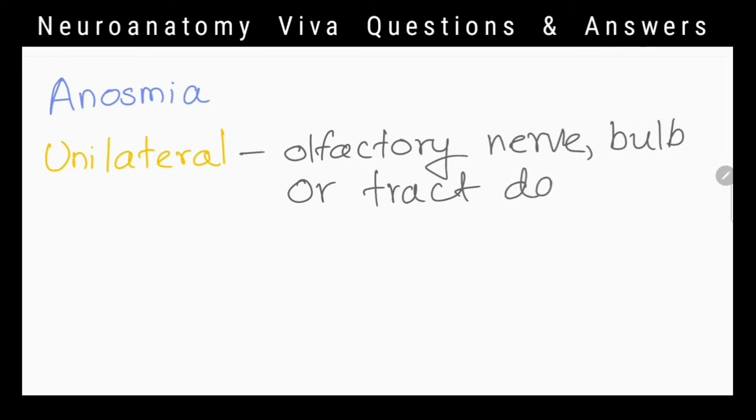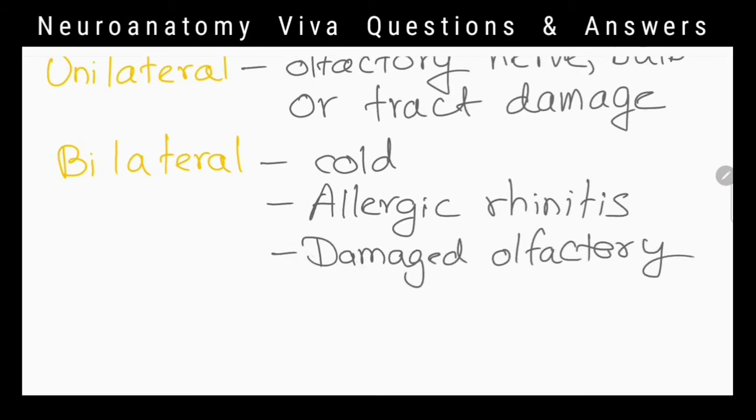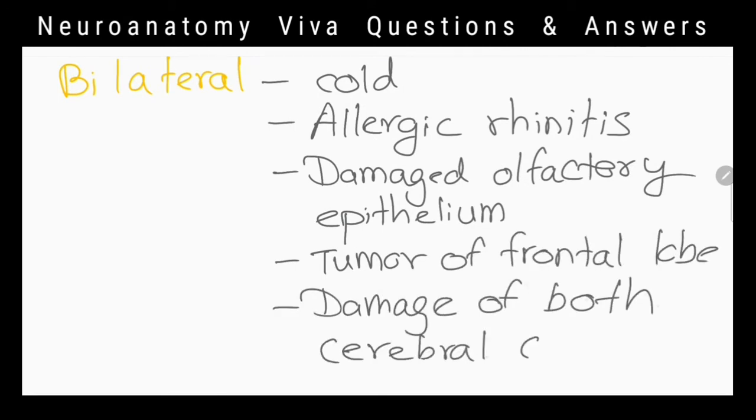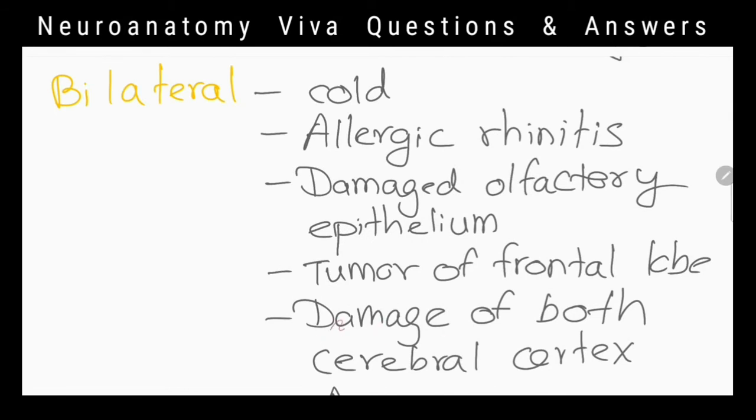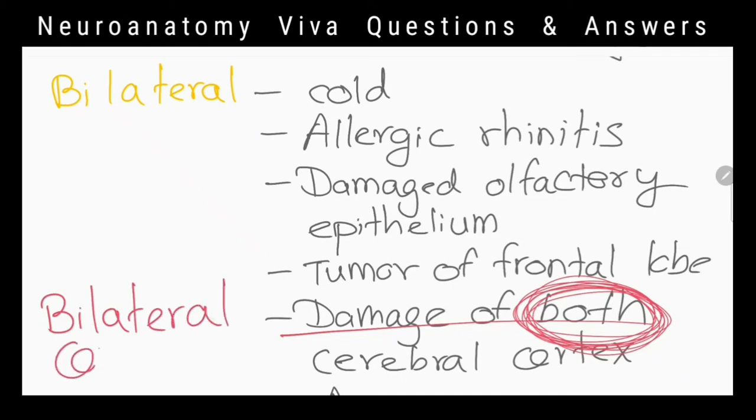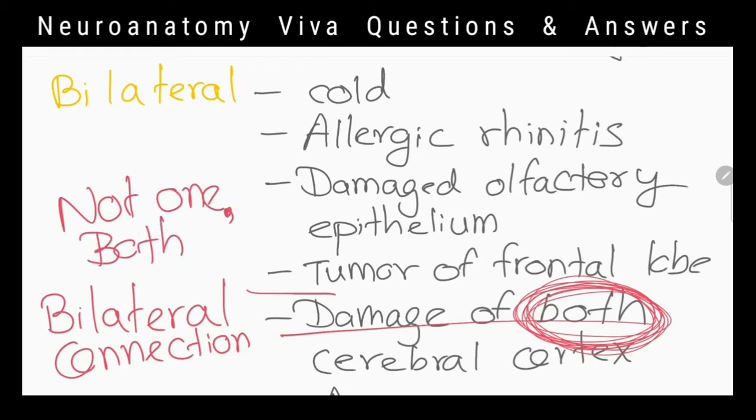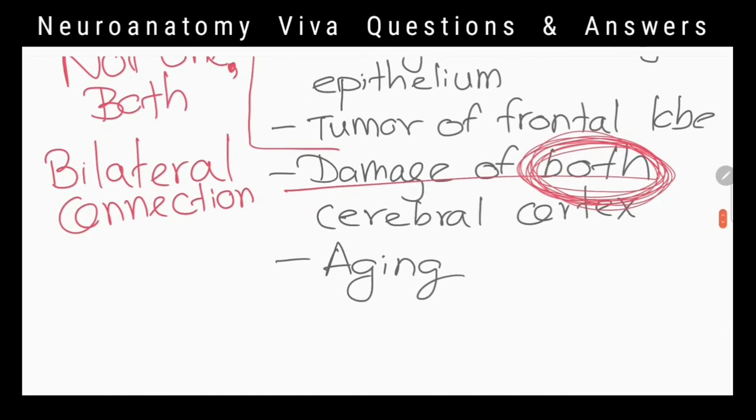Olfactory nerve. What are the causes for bilateral anosmia? Cold, allergic rhinitis, damaged olfactory epithelium. Why unilateral lesions of cortex don't cause anosmia? Because fibers from each olfactory tract travel to both cerebral hemispheres, so there is a bilateral connection.